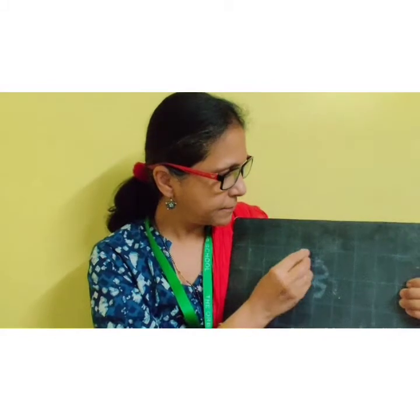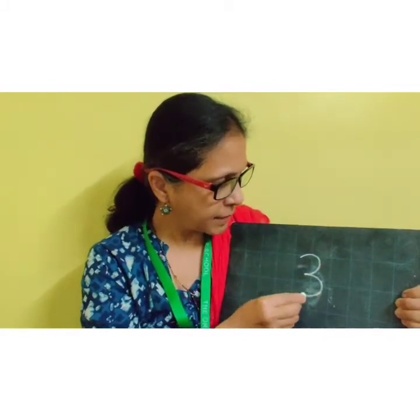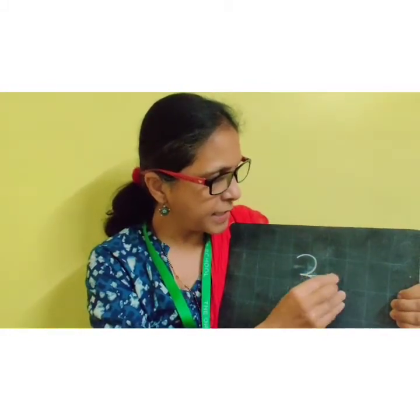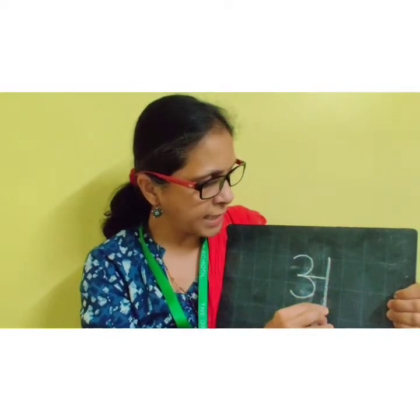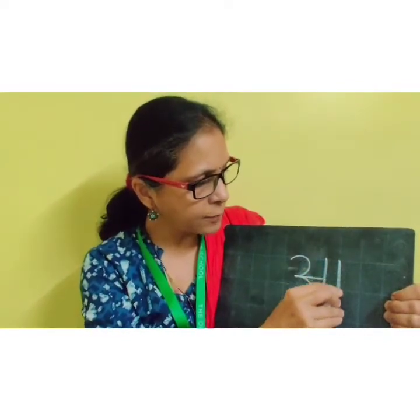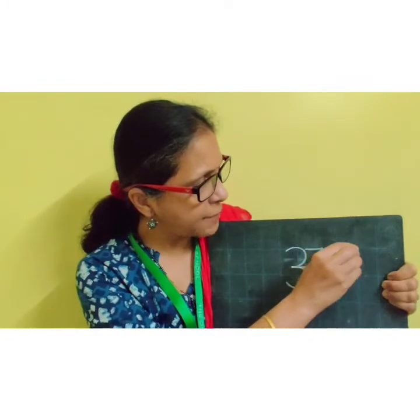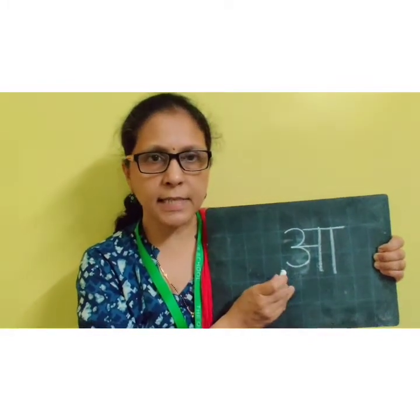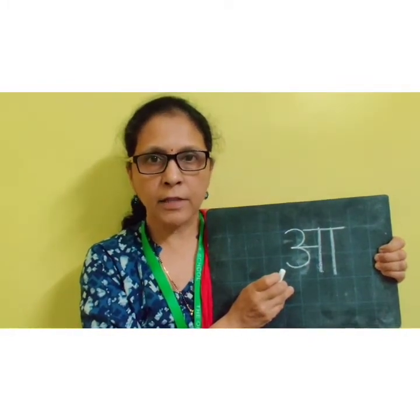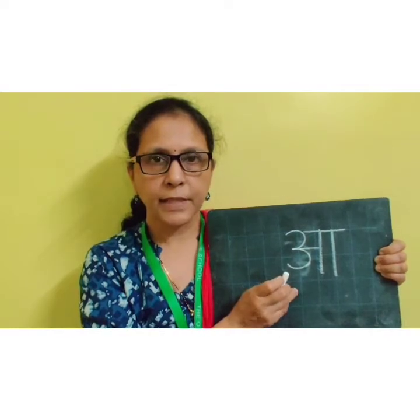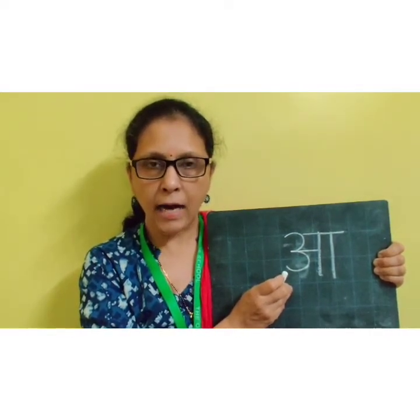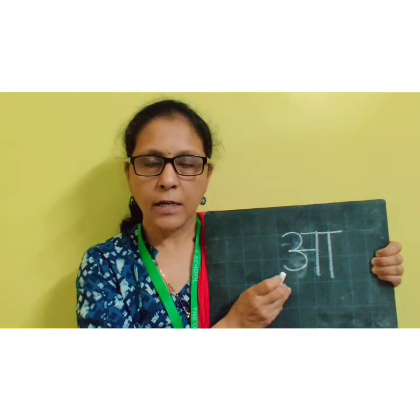I am going to write swar on the slate and you have to recognize it. Number 3: sleeping line, one standing line, and one more standing line, and overhead sleeping line. Which swar is this? You can give your answer to your mama. Yes, this is A.